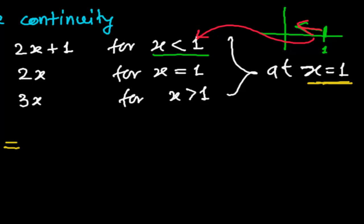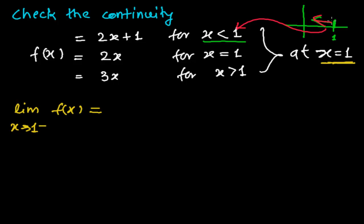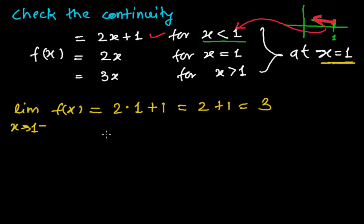Since 1 minus a very small number means we are very close to 1 but not exactly 1 — it's almost at 1 but still less than 1 — we use the piece 2x. So 2 times 1 gives us 2 plus 1... that is 3. So we get the left hand limit equal to 3.